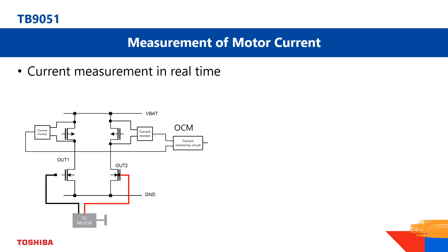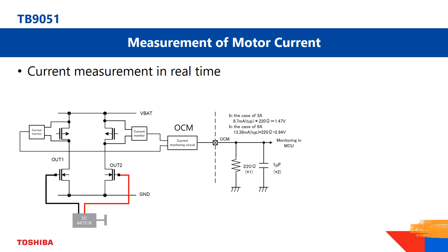By inserting a resistor between the OCM pin and ground, a voltage can be measured and fed back to an analog pin of the controlling MCU. So a blocking of the motor, a load open, or even the motor angle can be detected using this monitor function.